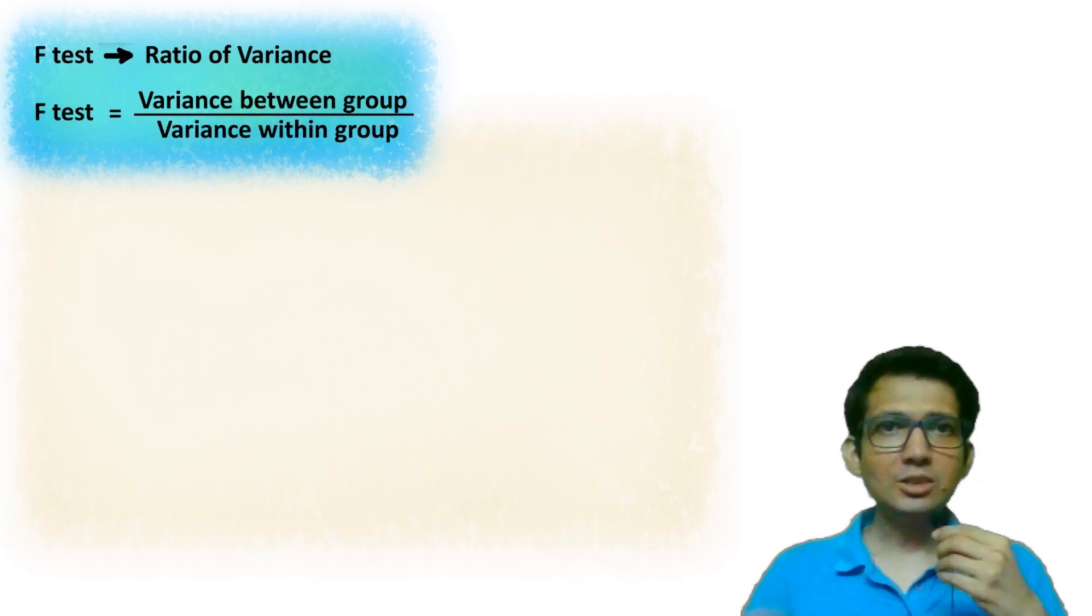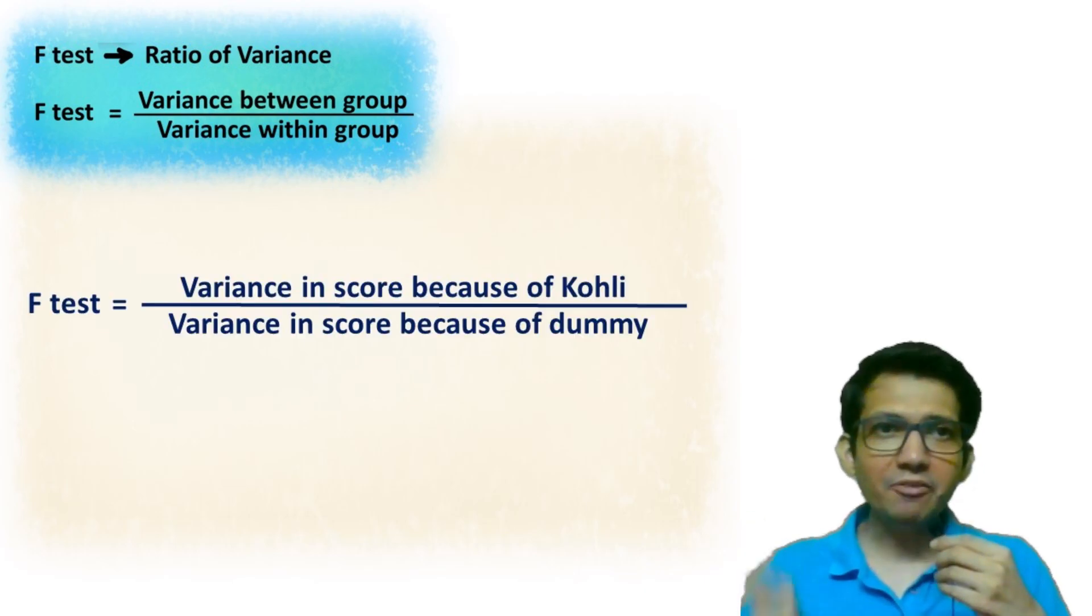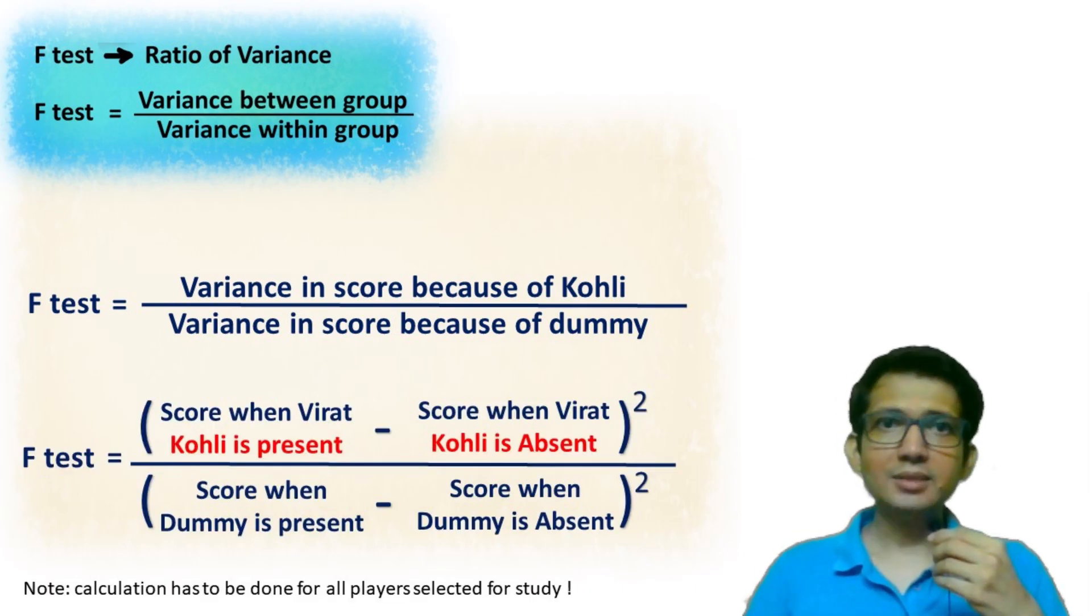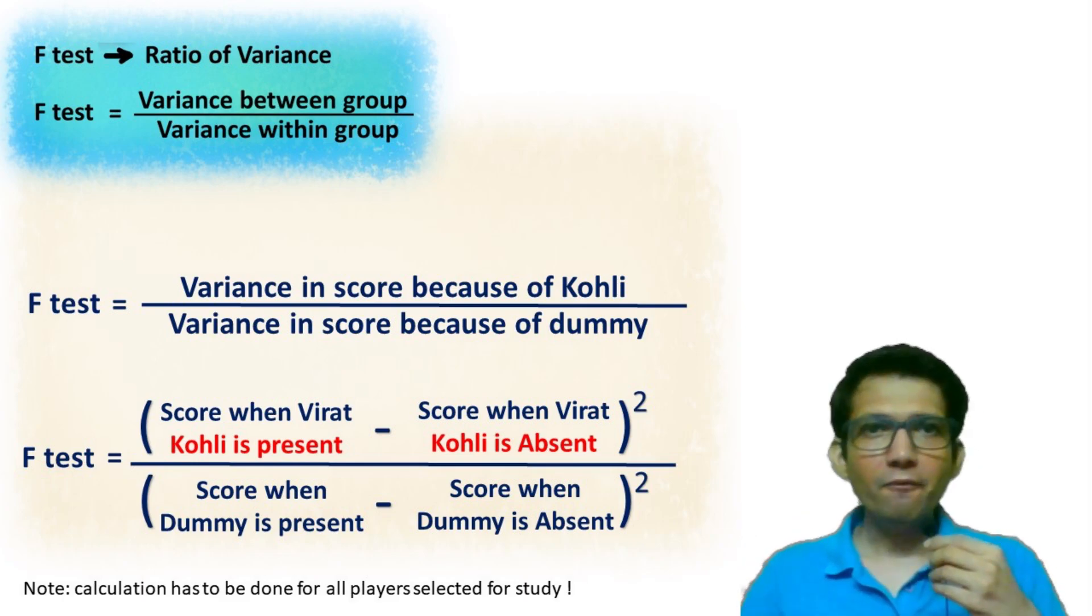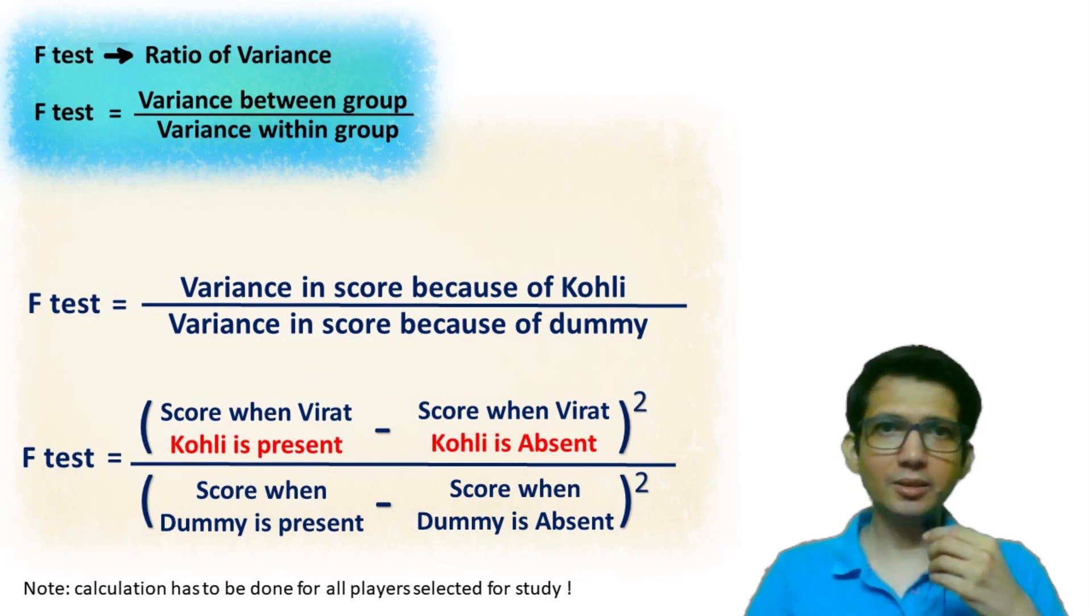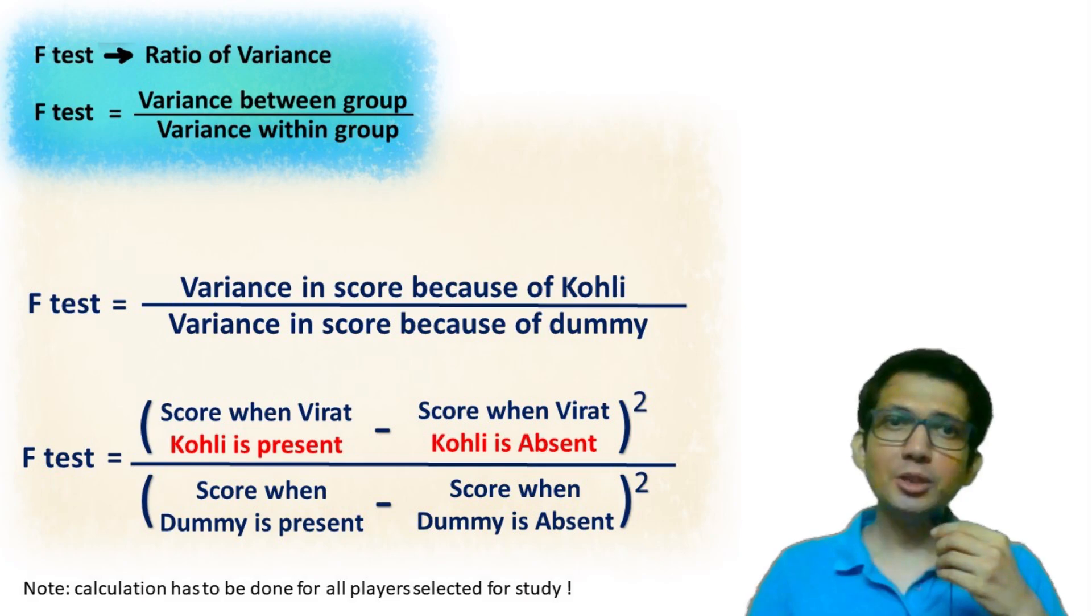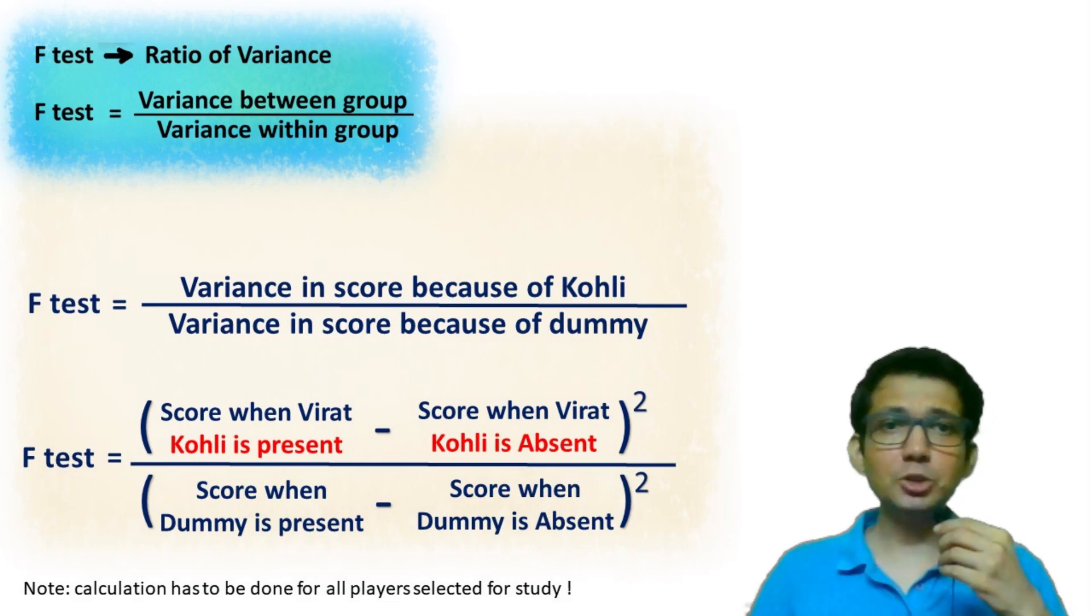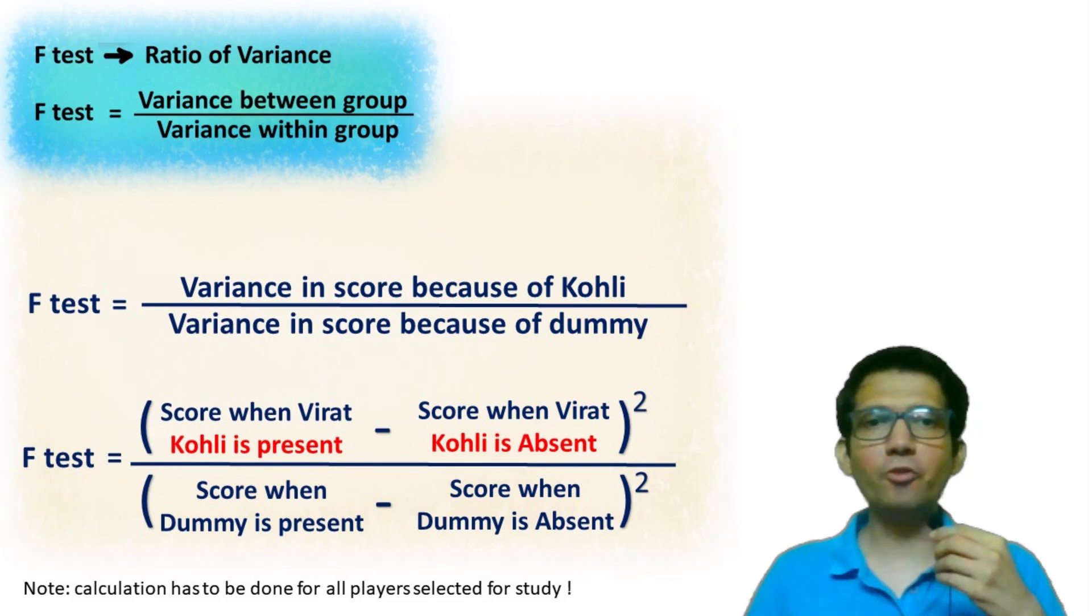This result is compared with the dummy in the form of statistical F test. That is, variance due to presence and absence of player versus variance due to presence and absence of dummy. If this ratio is large, then you can say the player is really playing well. And if this ratio is less, then the conclusion will be that the player is not in good form.